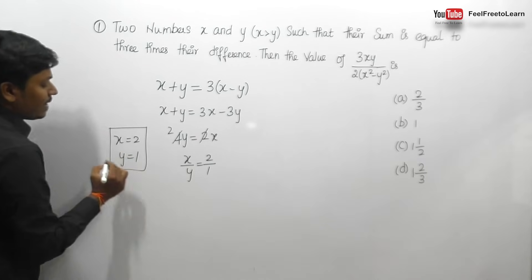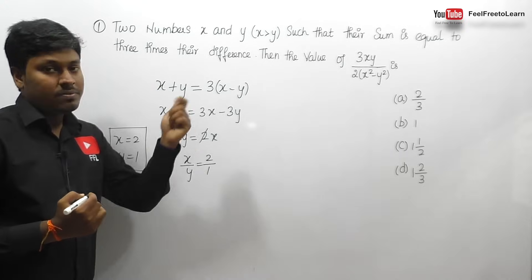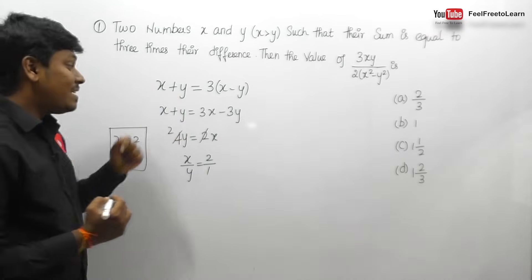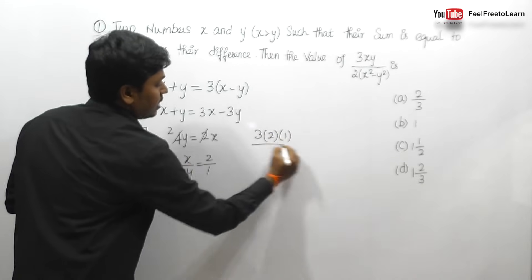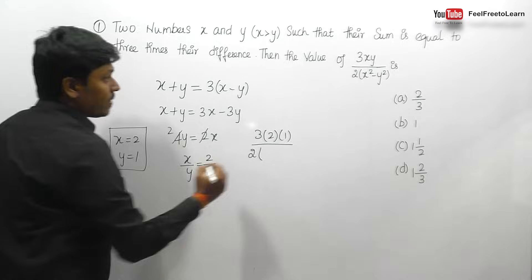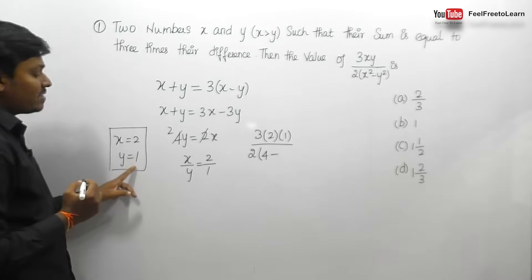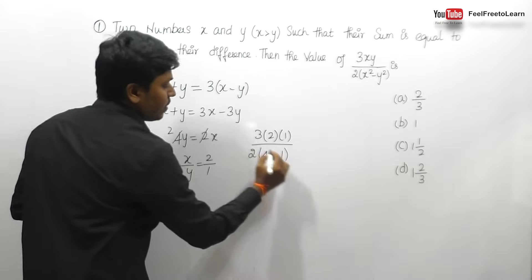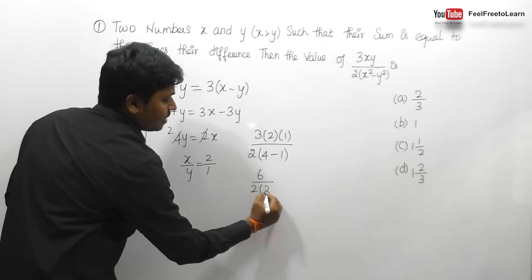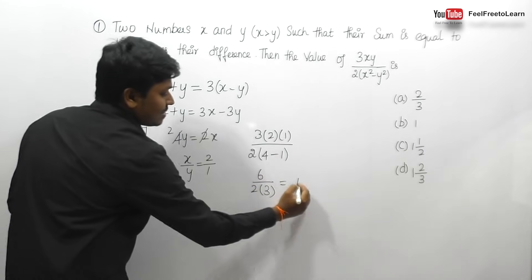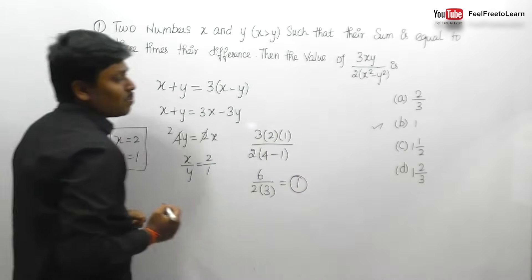Now we substitute x equals 2 and y equals 1 into the expression: 3xy divided by 2(x² minus y²) gives 3 times 2 times 1, divided by 2 times (4 minus 1), which is 6 divided by 6 equals 1. So option B, that is 1, is the answer for question number 1.